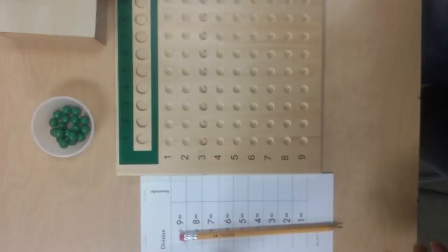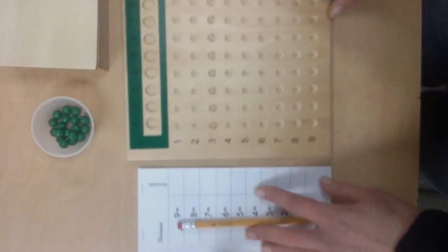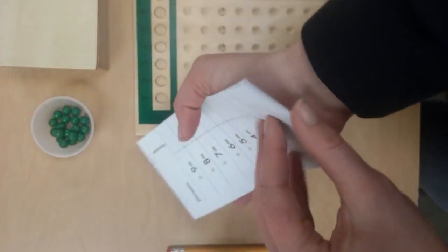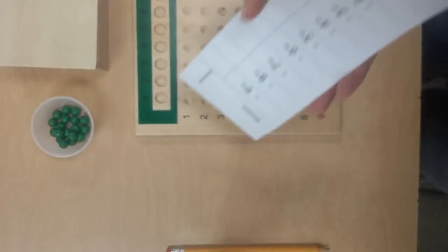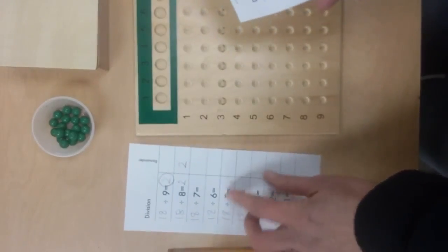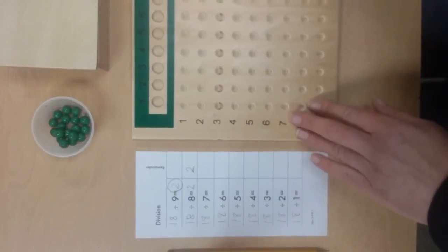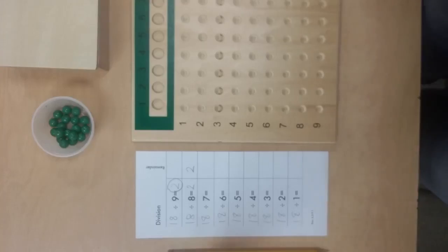Once they know how to use the board, if you leave it out with these papers—you can make a little book like this or just have loose papers—then they can come and do the practice during math time, during independent time, anytime they want to practice division. And that is it.